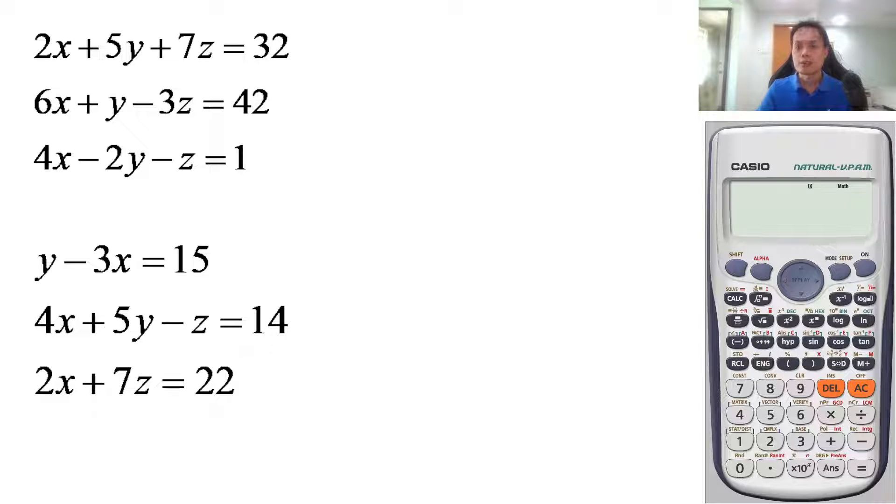Let's start off by pressing mode, press 5 equation, press number two. Now number one is for two unknowns, number two is for three unknowns xyz, so you press number two.